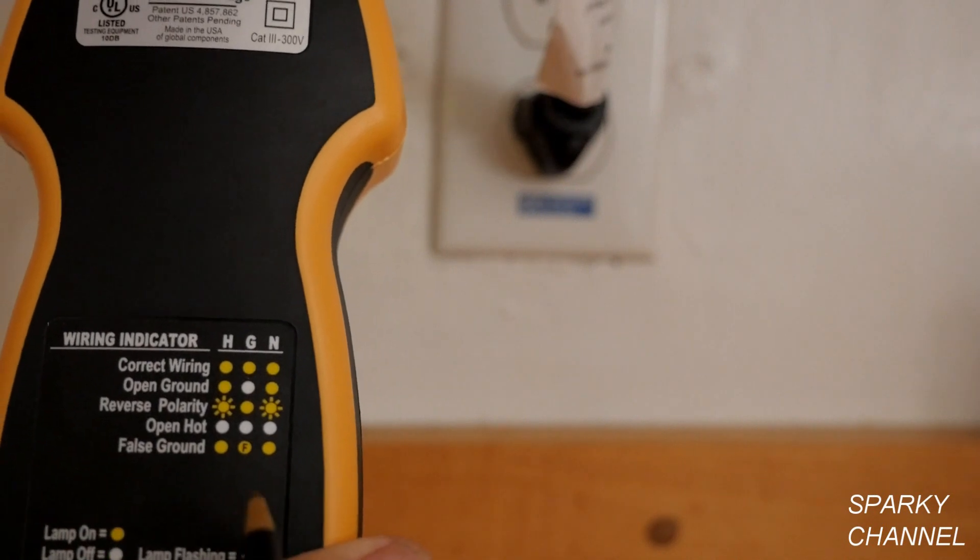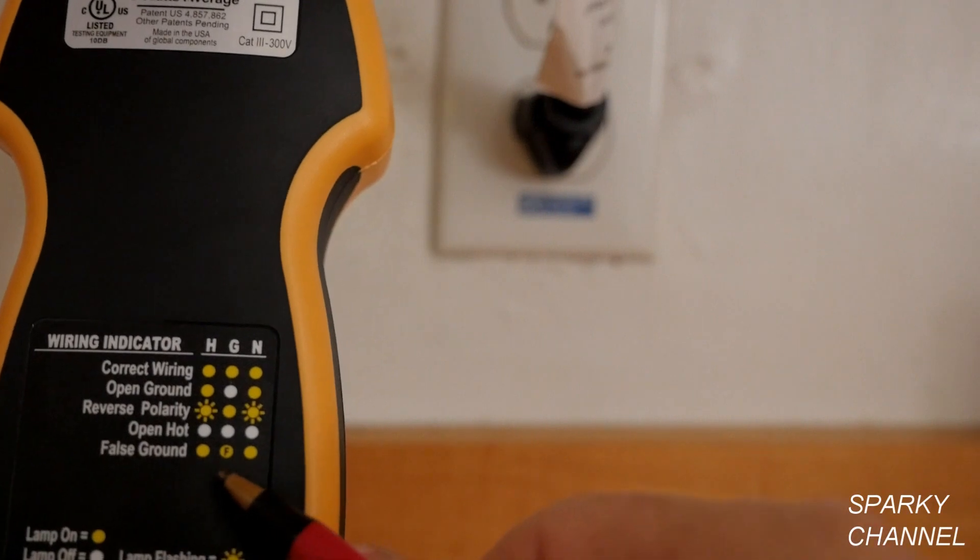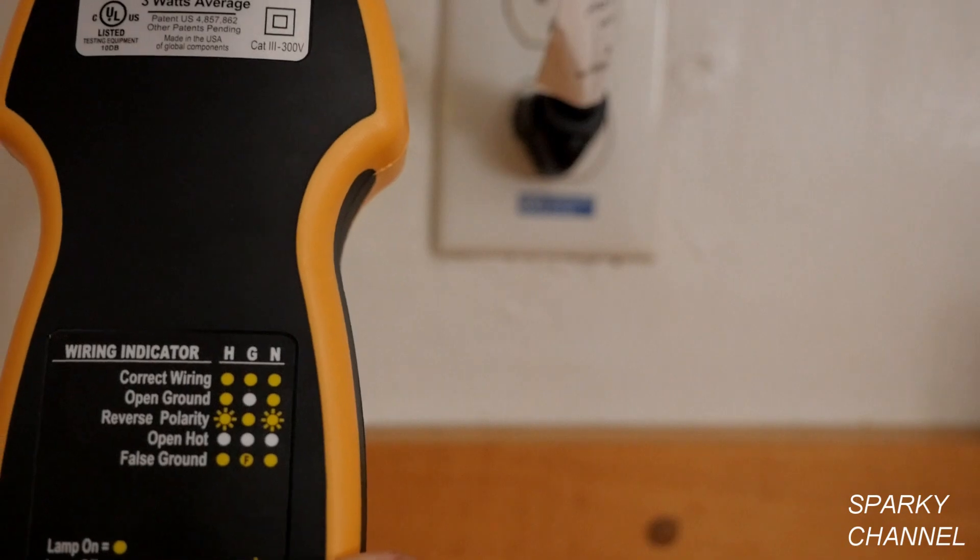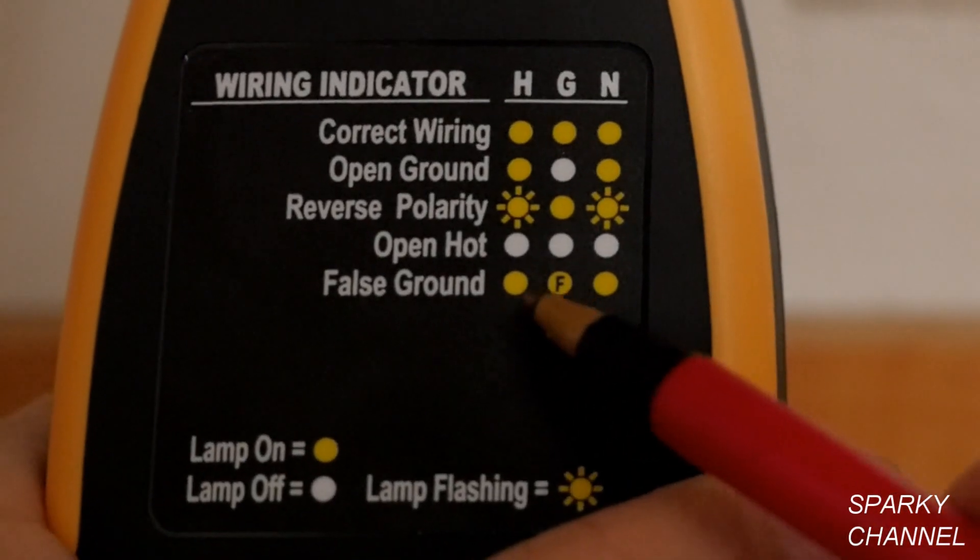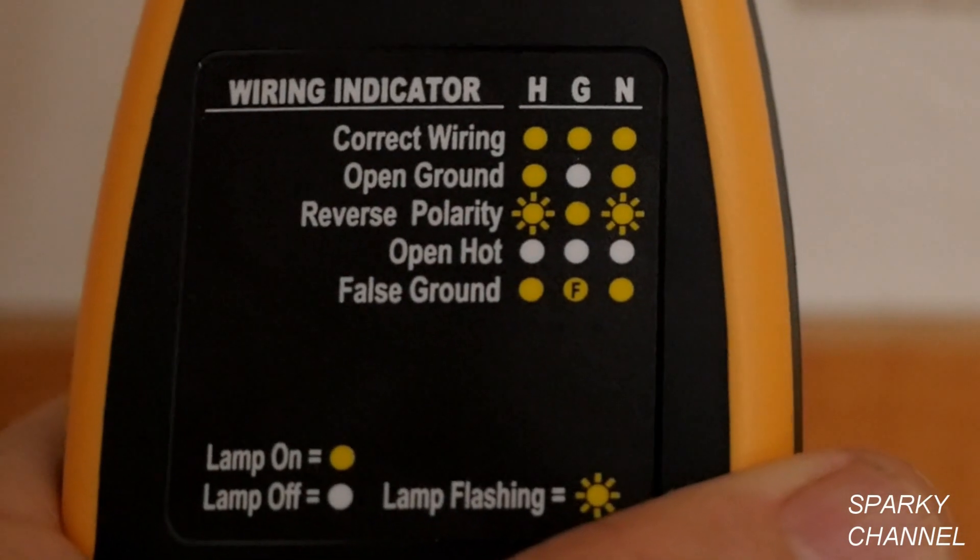This meter has a very special indication for a false ground. That's all three lights are lit, but the ground has an F in the middle of it, meaning false. This means there is a connection between the neutral and the ground creating a false ground.